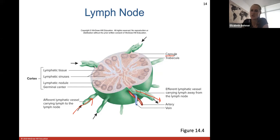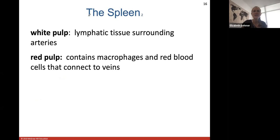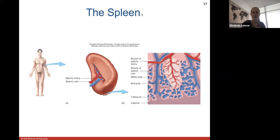The spleen is the size of a clenched fist, located in your abdomen. It filters blood, recycles and destroys old red blood cells, detects and responds to foreign substances, and acts as a blood reservoir. The spleen is made up of white pulp and red pulp. White pulp is lymphatic tissue surrounding arteries, whiter in color because it lacks red blood cells. Red pulp contains macrophages and red blood cells connected to veins, with the splenic artery and veins providing blood supply.